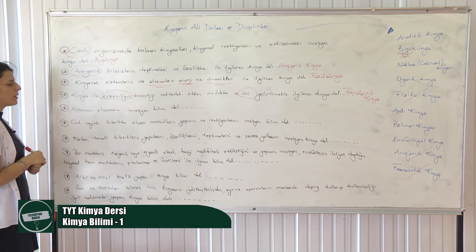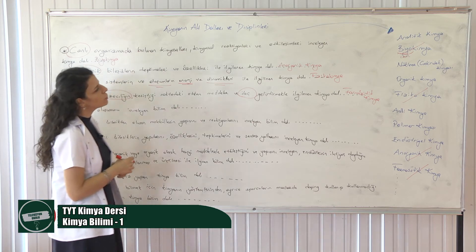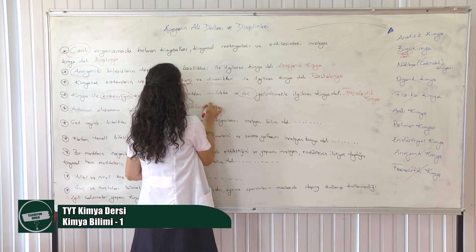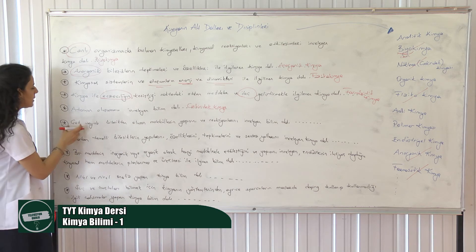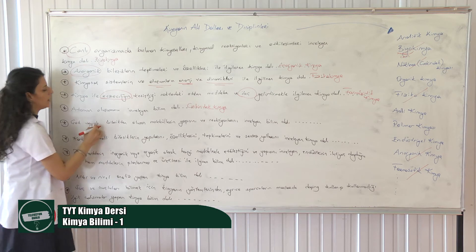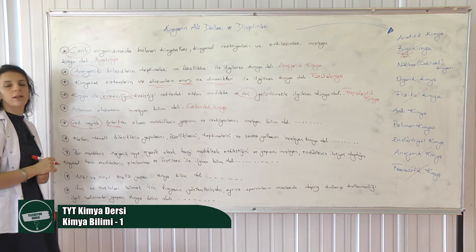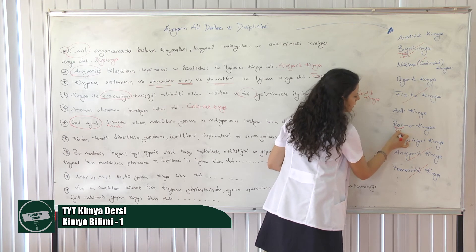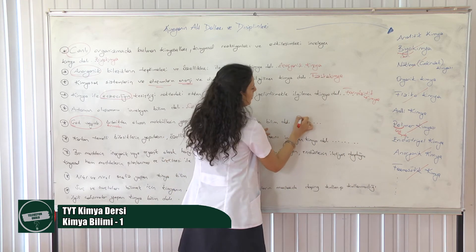Atomun oluşumunu inceleyen bilim dalı. Atomun oluşumunda proton, nötron, elektron, çekirdek var. Hangisi buna uygun? Atomun çekirdek kimyası, yani nükleer kimya. Zaten nükleer enerji, atomun alt parçacıklarıyla uğraşmalarla meydana geliyor. Sıradaki: çok sayıda bileşikten oluşan moleküllerin yapısını ve reaksiyonunu inceleyen kimya dalı. Önemli olan çok sayıda olması — poli demek çok sayıda, mer demek birim. Bu birimlerin sürekli tekrarından yapılan yapılara polimer kimyası diyoruz. Polimer kimyasını da yerleştirdik.